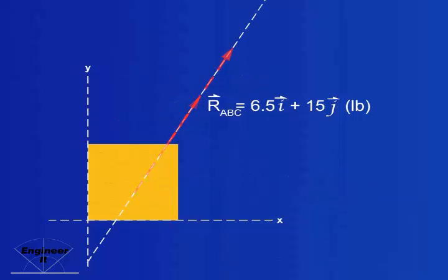And that is how we find the location of the line of action for a resultant vector.